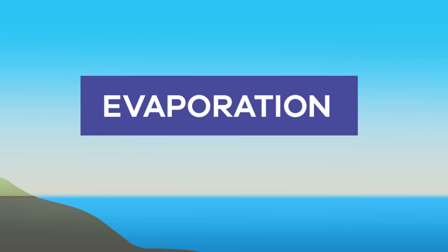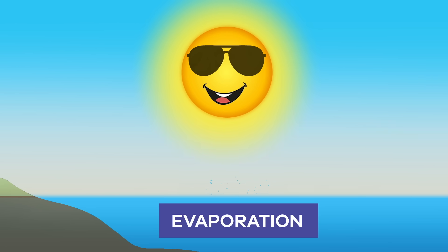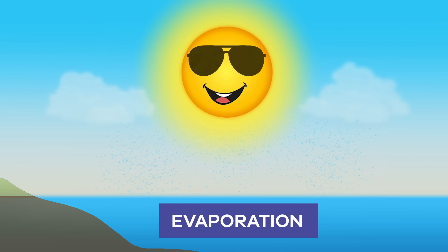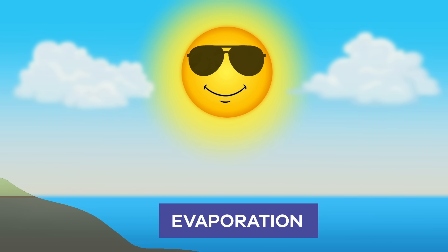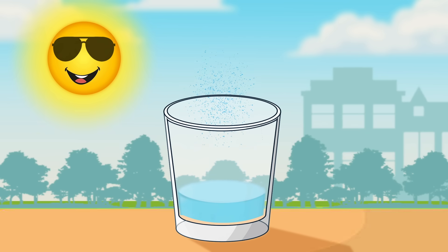First up, evaporation happens when the sun heats up the waters in oceans, lakes, rivers, and other bodies of water. When the water gets hot enough, it changes into a gas. This gas then evaporates into the air. You can see this process for yourself if you leave an open container of water in your home or outside. Once it gets hot enough, it will evaporate.